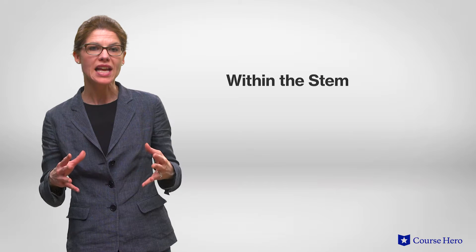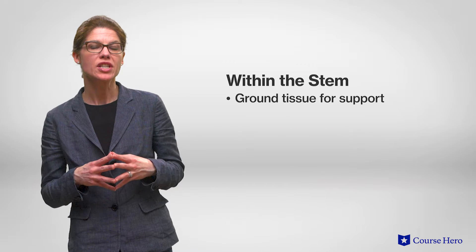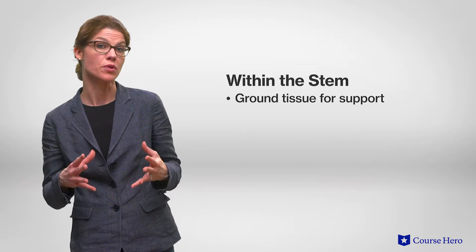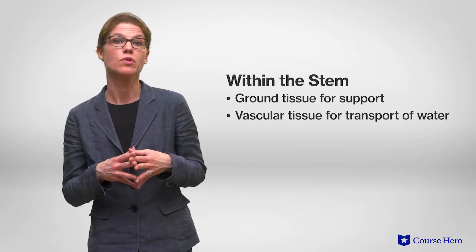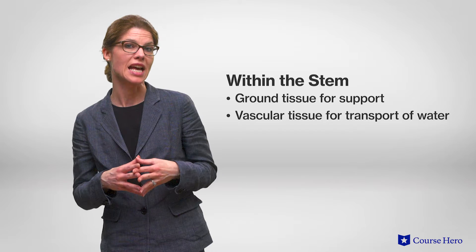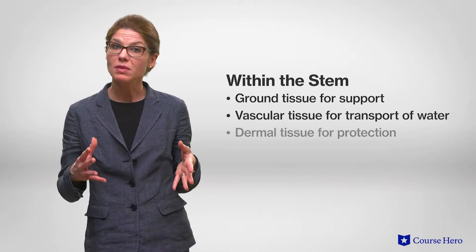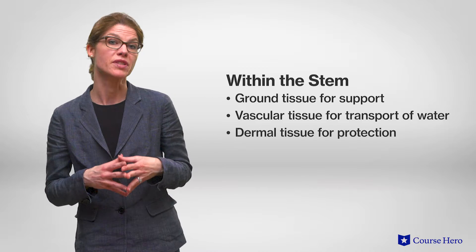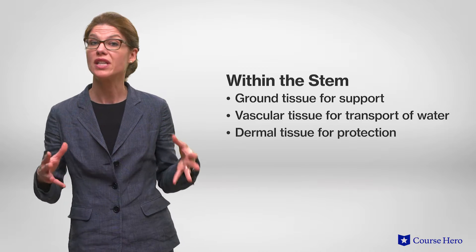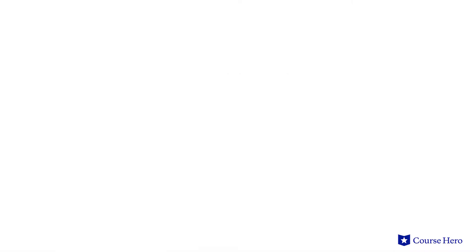Within the stem, ground tissues provide support. Vascular tissue transports water and sap, and dermal tissue provides protection and prevents water loss.